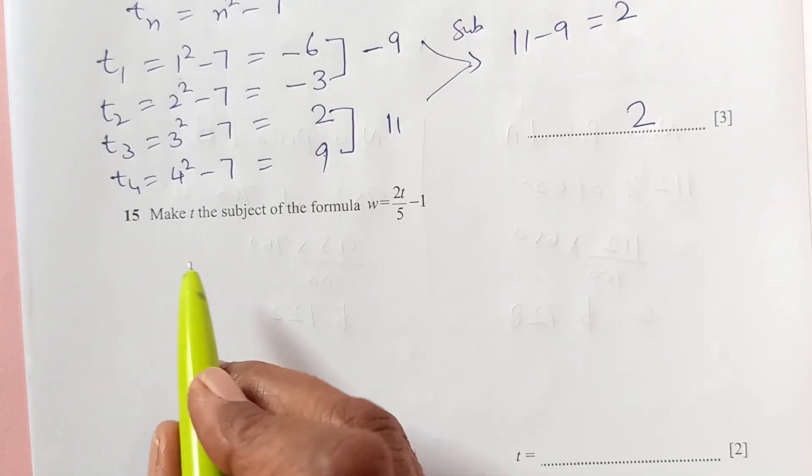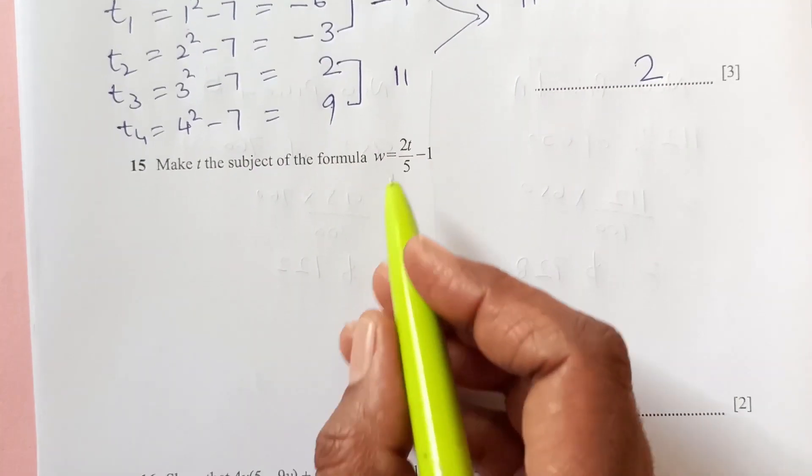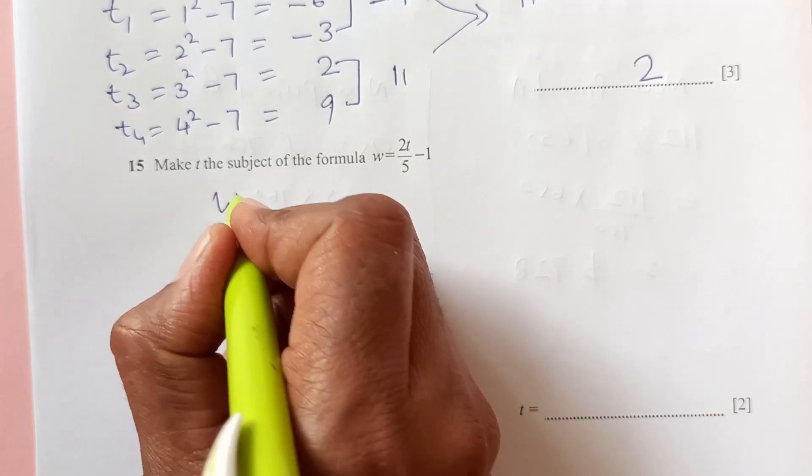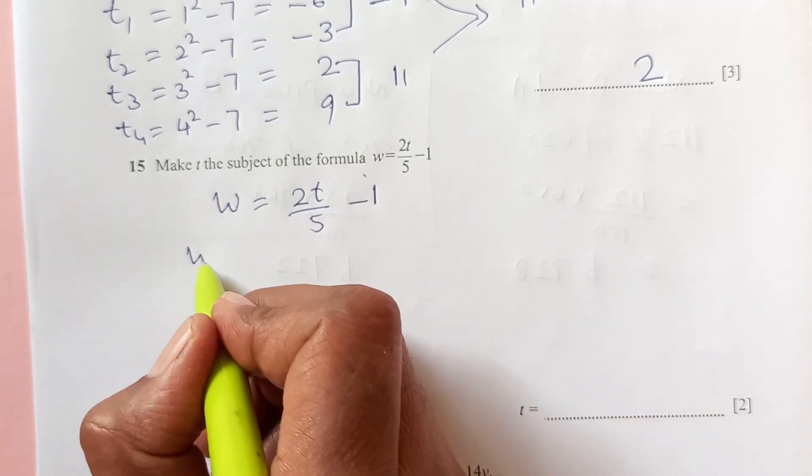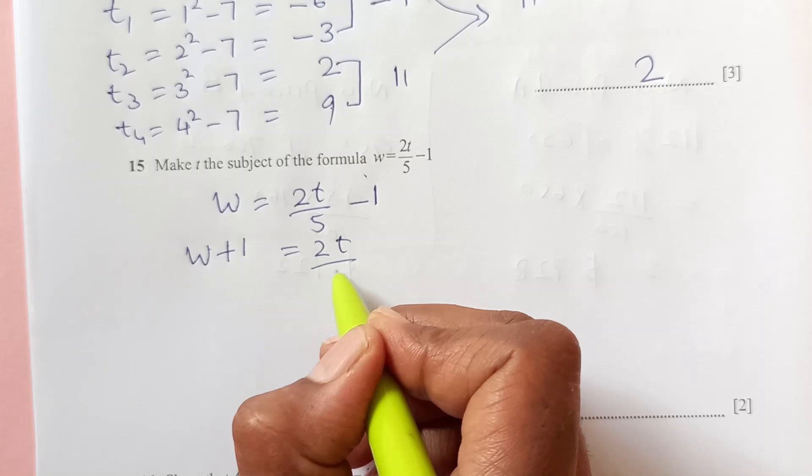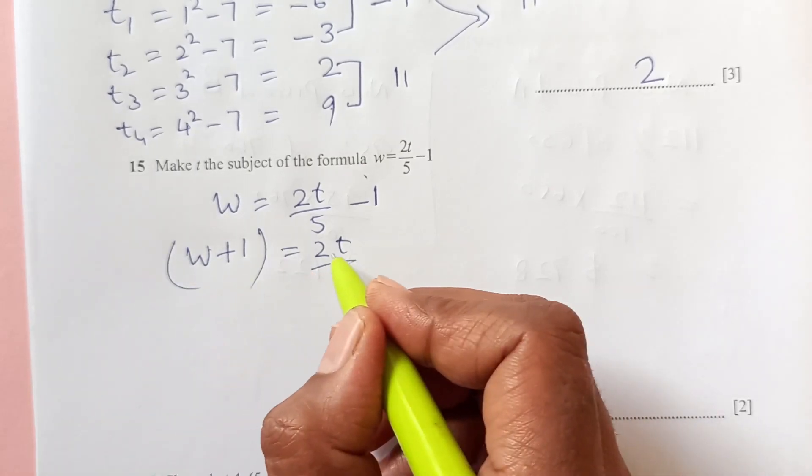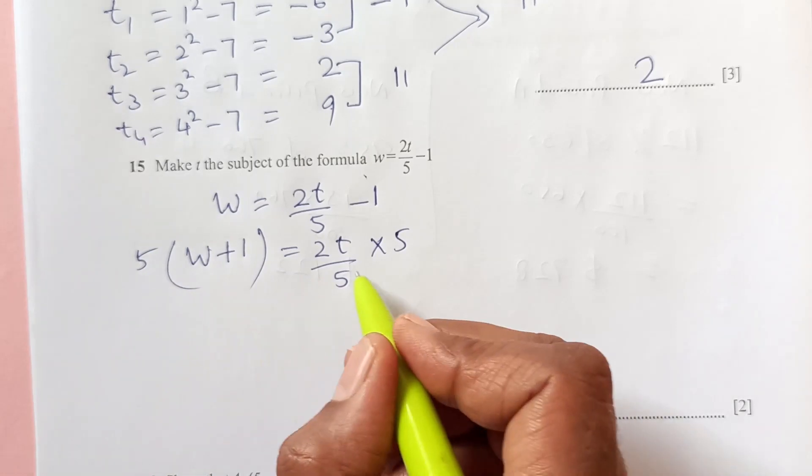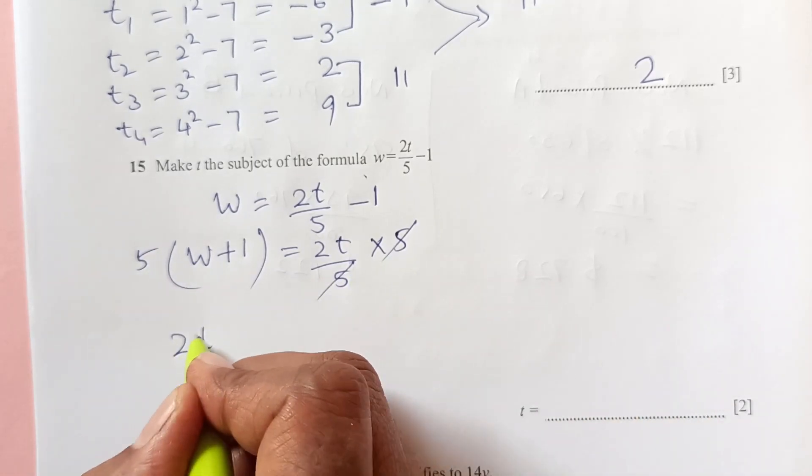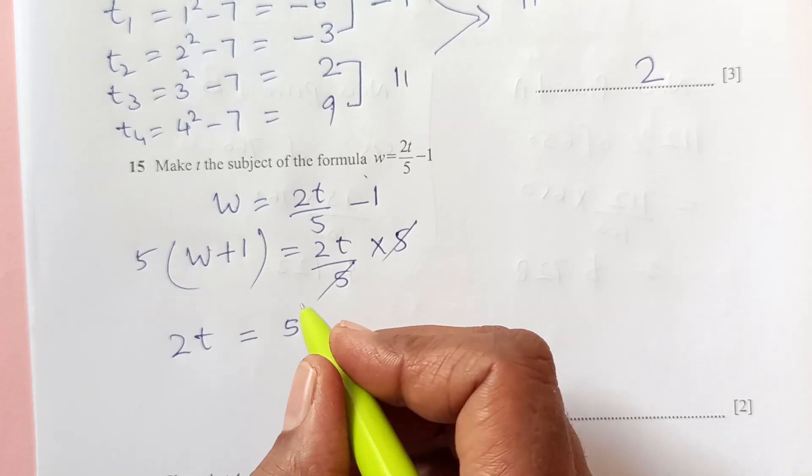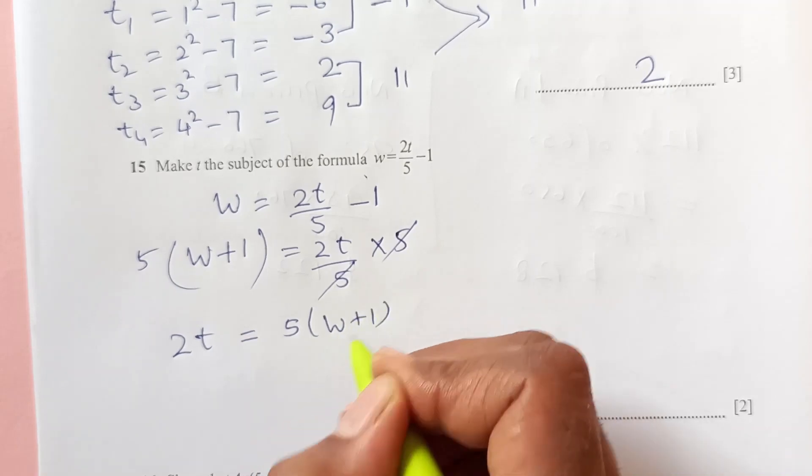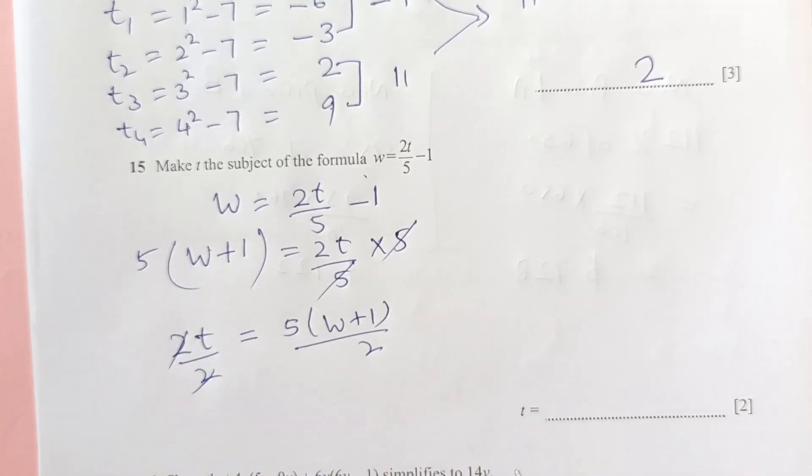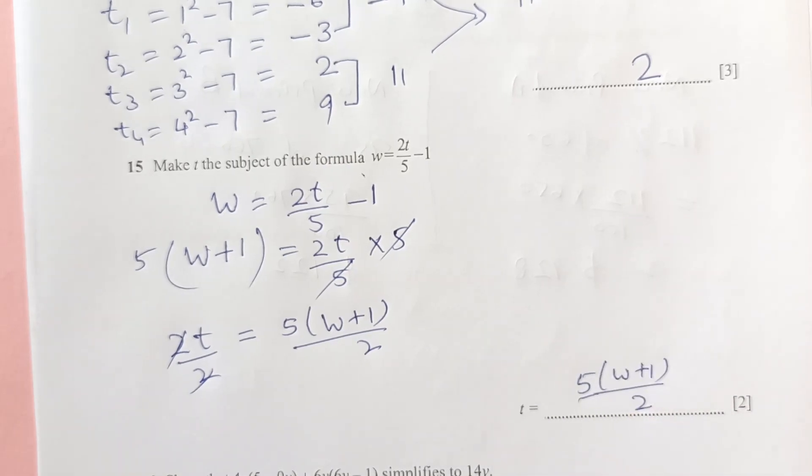Number 15. Make T the subject of the formula. So T is here. So we will get rid of other terms one by one. So here is negative 1. So shift negative 1 to the side. W plus 1 equals to 2T over 5. Now we will multiply the whole thing by 5 by 5. So this and this is gone. So we have 2T is equal to 5 into W plus 1. Now over 2 over 2. So this is gone. So T is 5 into W plus 1 over 2.